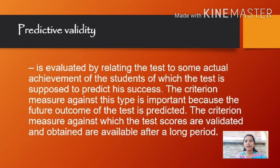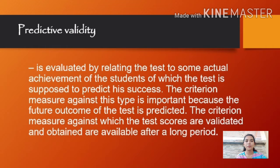The third type of validity is predictive validity. It is evaluated by relating the test to some actual achievement of the students, of which the test is supposed to predict success. The criterion measured against this type is important because the future outcome of the test is predicted. The criterion scores validated against it are obtained and available after a long period.